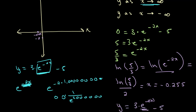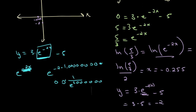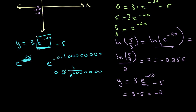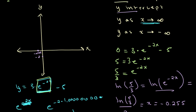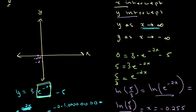We also have to remember the rest of the equation — the 3 and the 5. As e to the power of negative 2x approaches 0, we get 3 times a number approaching 0 minus 5, which equals negative 5. So our function y approaches the value of negative 5. It gets very close but never actually reaches it.